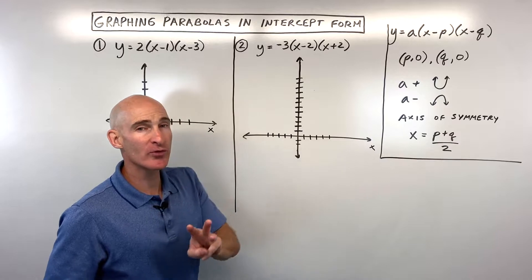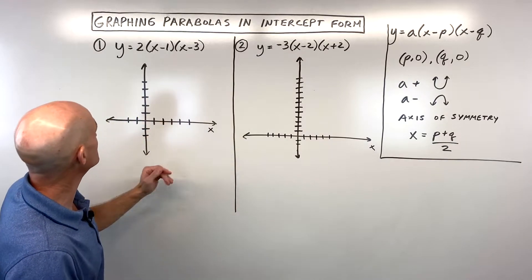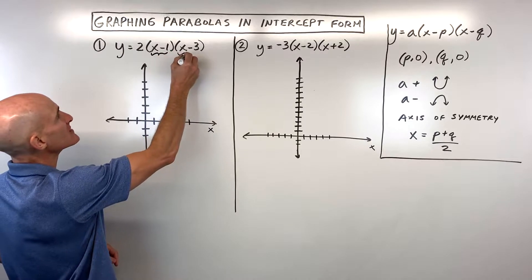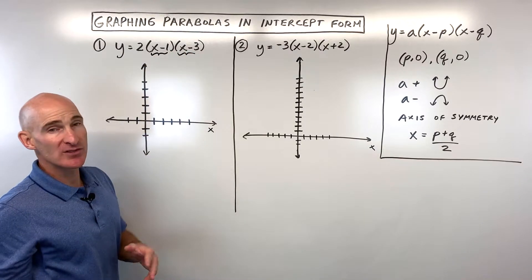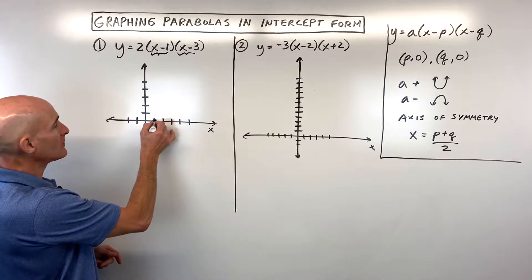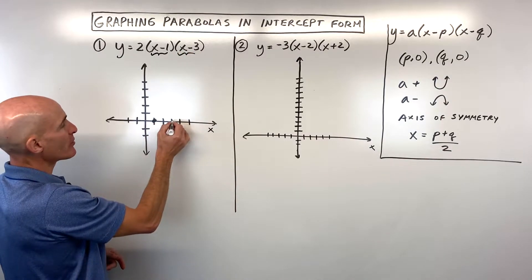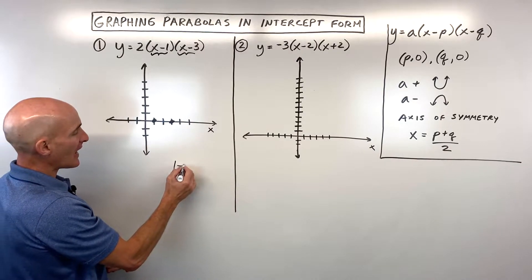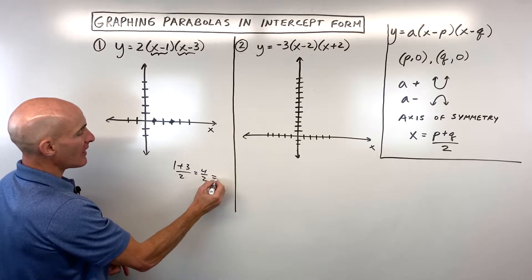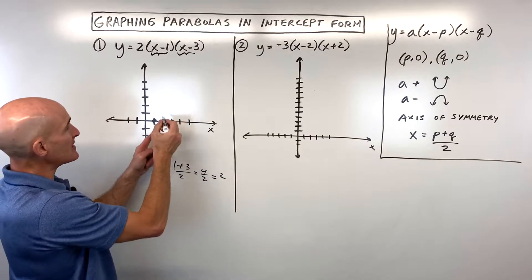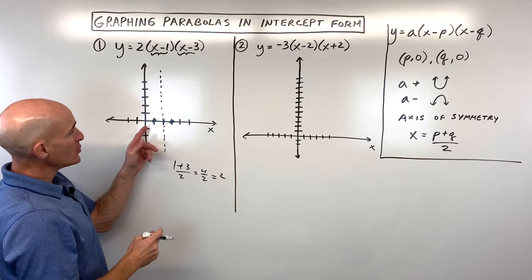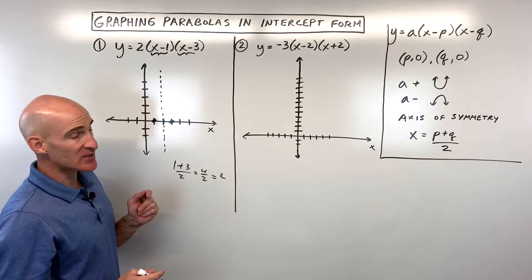Let's go through three examples, starting with the first one. We set each factor equal to zero: x minus one equals zero gives x equals one, and x equals three. Adding one and three together and dividing by two gives two, so the axis of symmetry is at x equals two — halfway between those two x-intercepts.